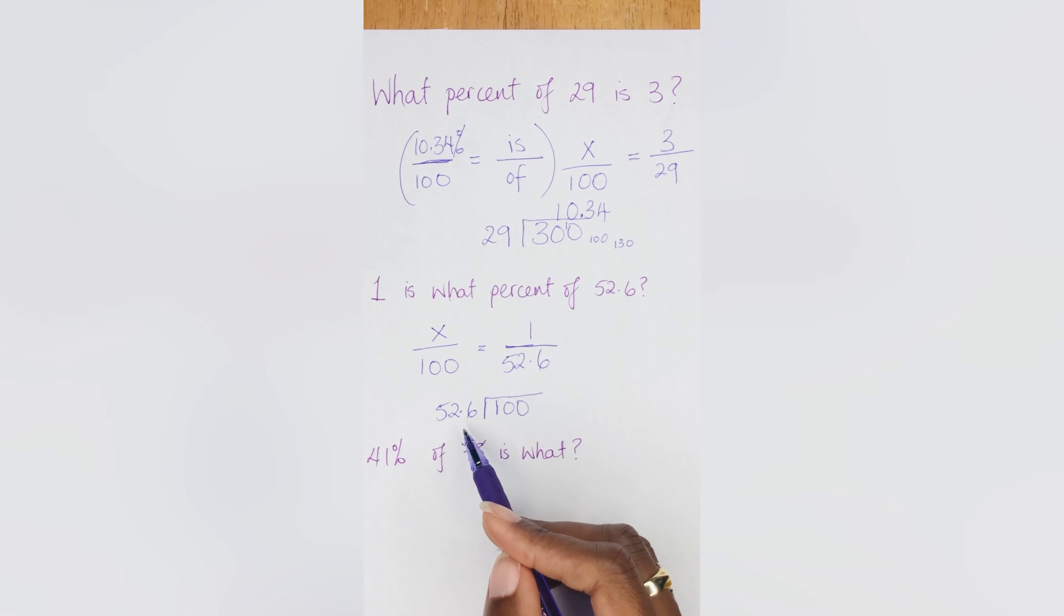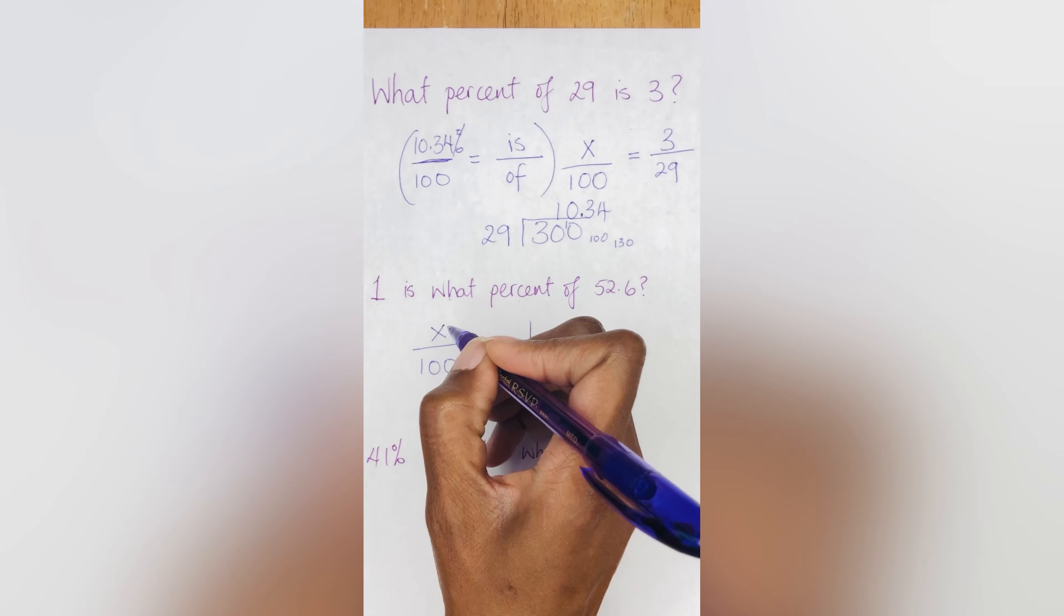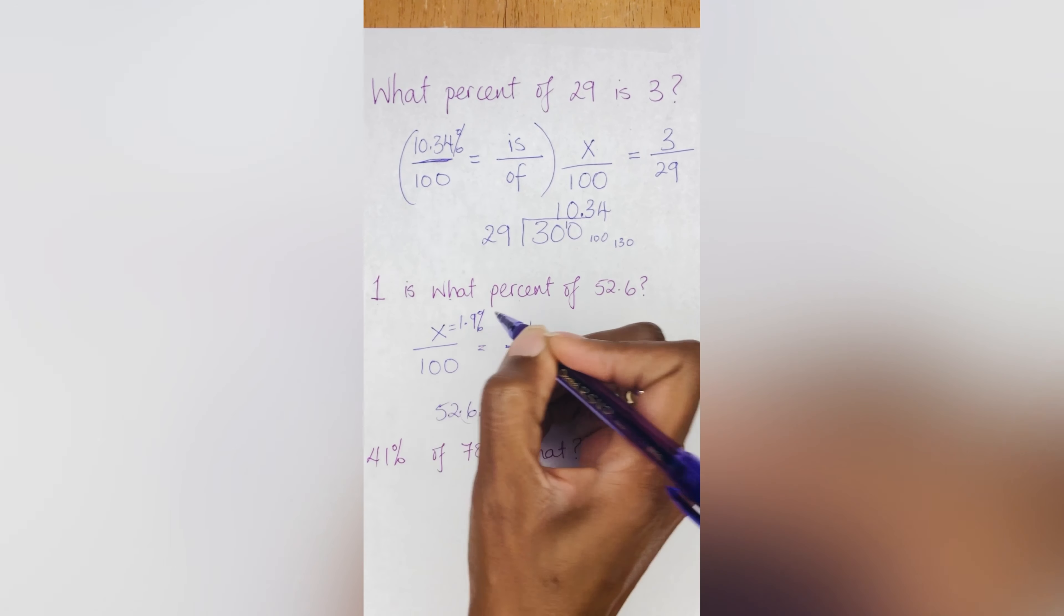Well, we don't like decimals when we're dividing, do we? So if we take this out and move the decimal one place out, that will give us 526. And then when you move the decimal one place, you have to add a zero here. That's how it goes. So 526 into 1000. Well, that's going to go one time, isn't it? And then that's going to leave about 474. That's going to go nine. All right. So that's about 1.9%. So X equals 1.9%.